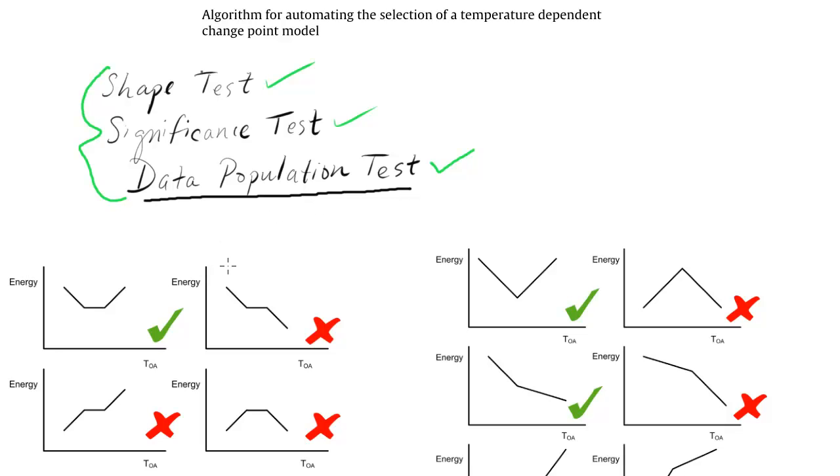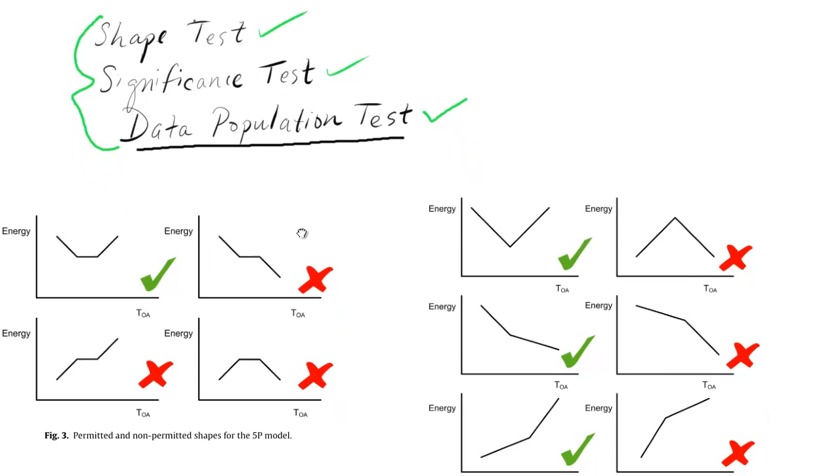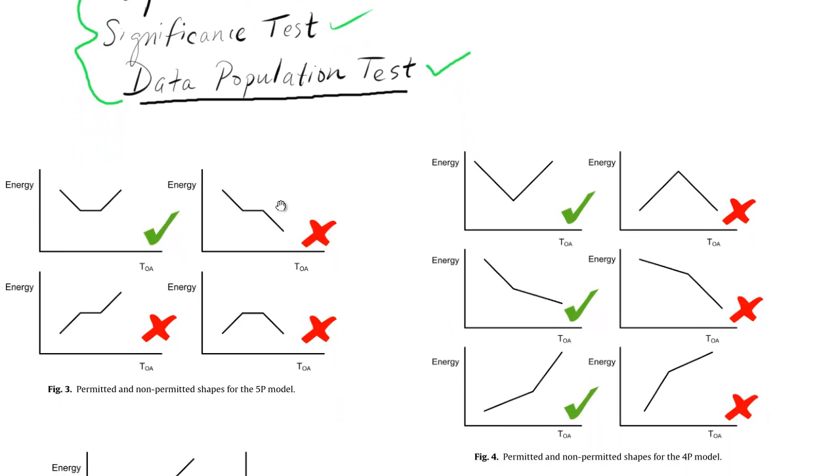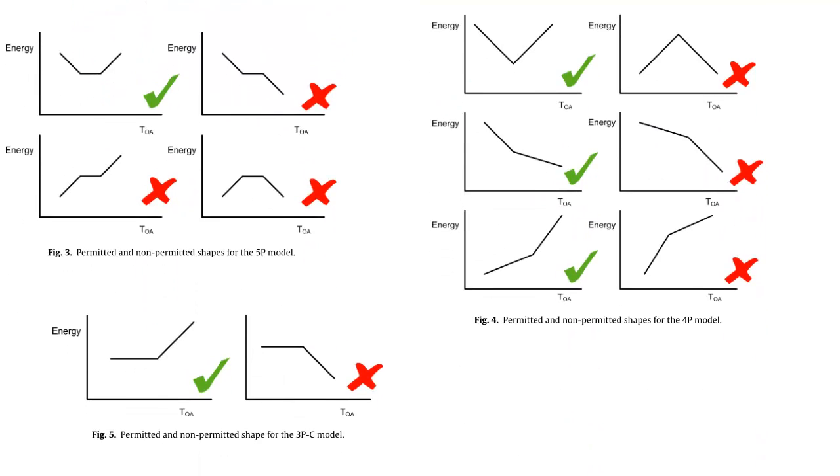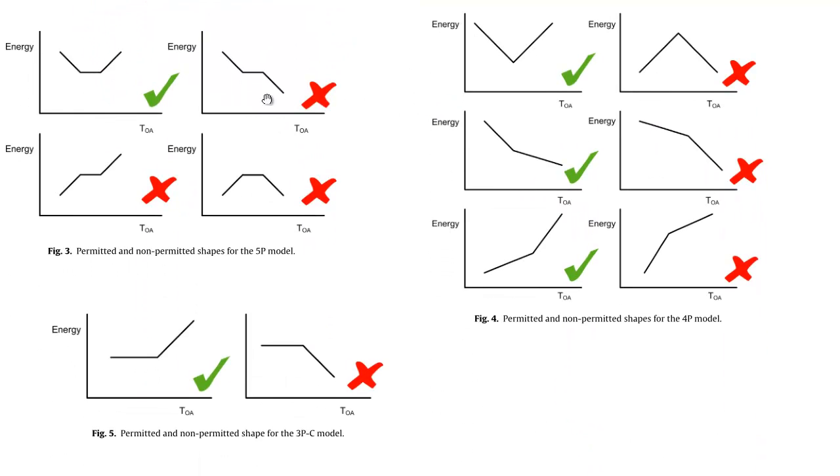We start with the shape test. What we have here is all of the sample things that are good and not good. So for instance, the 5P model, there are four different shapes you could end up with, and only one of those makes sense if you have a sloped downward section to begin with, and then it slopes up with some constant in the middle.